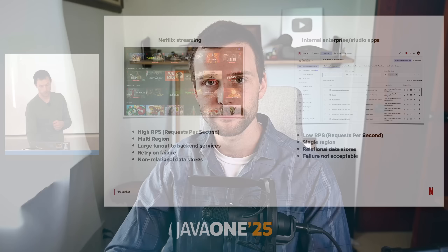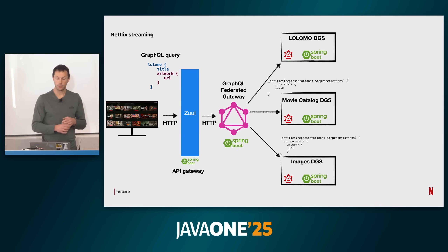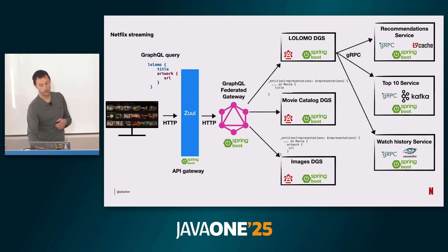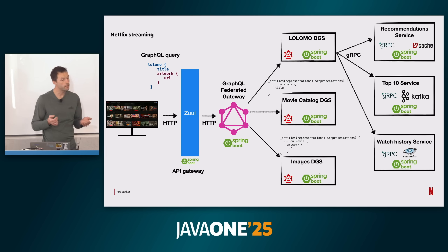Streaming apps use non-relational databases, whereas the studio apps use your typical relational databases — because the type of data streaming apps store just doesn't fit in relational models. Here's how the back-end architecture works: you open Netflix on your TV, that sends a single GraphQL query to an API gateway. The query gets broken up and fanned out to a bunch of microservices. All those microservices respond, and then the gateway smashes those responses together, and you see what to watch next.